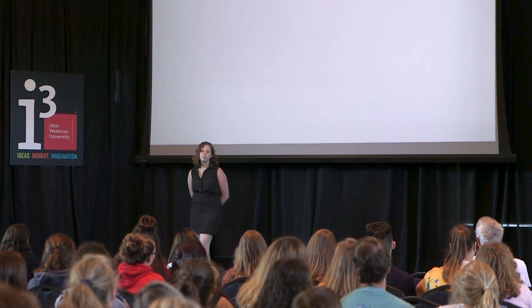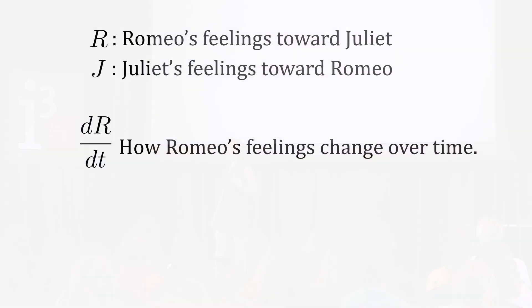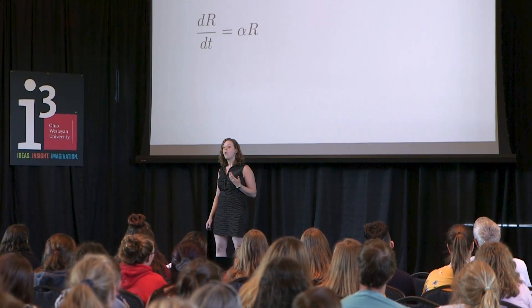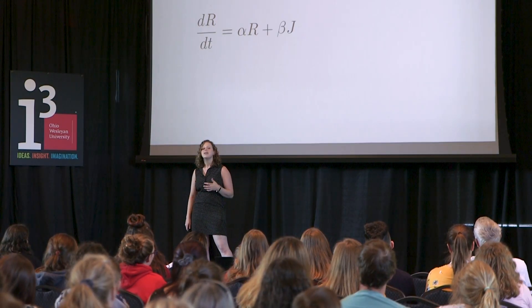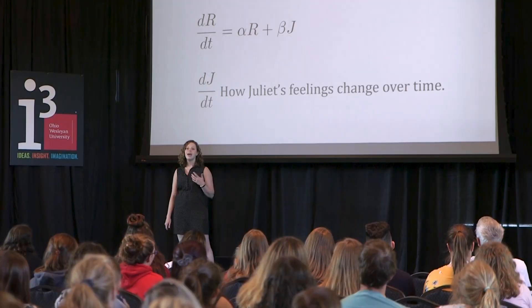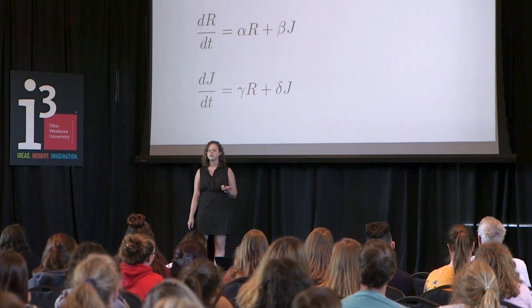For our problem, we'll let r represent Romeo's feelings for Juliet, and j to represent Juliet's feelings for Romeo. dr/dt will tell us how Romeo's feelings change over time, and it can depend on his own feelings or Juliet's feelings. Similarly, dj/dt will represent Juliet's feelings changing over time, and it can also depend on the same things.